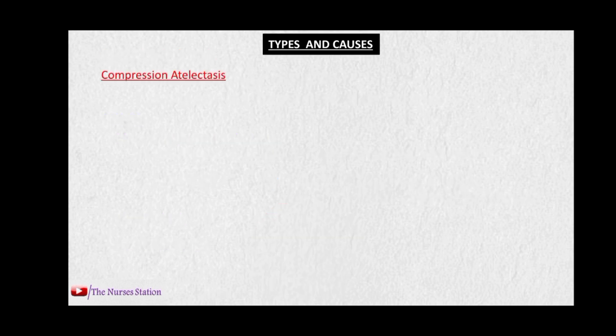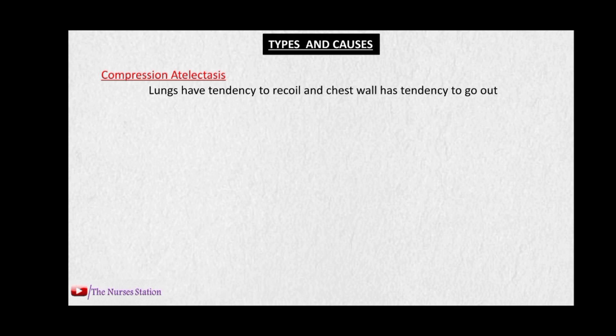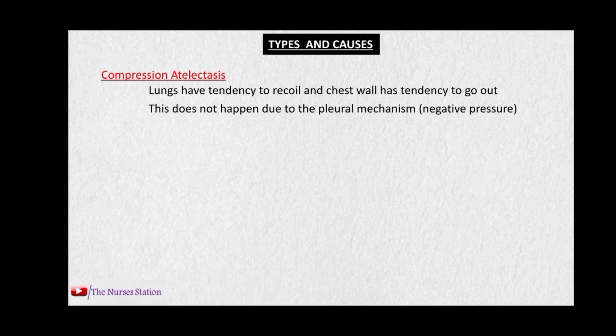The next type is compression atelectasis. Remember, the lungs have a tendency to recoil because these are elastic organs, and the chest wall has a tendency to go outward. But this doesn't happen — the lungs don't collapse and the chest wall doesn't go out because of the pleural mechanism, which maintains a negative pressure in the pleural cavity.